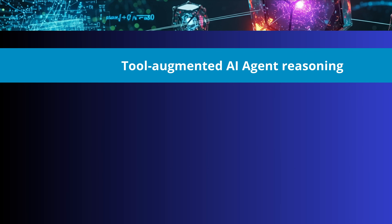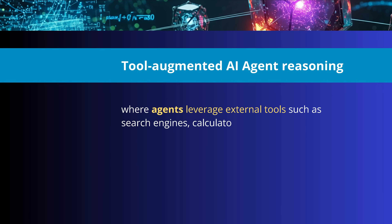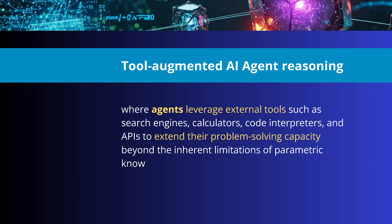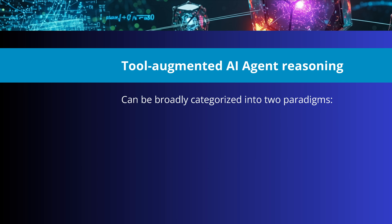We're going to talk about tool-augmented AI agent reasoning today. This is exactly where the agent leverages external tools such as search engines, calculators, code interpreters, and any API to extend the problem-solving capacity beyond the inherent limitation of parametric knowledge.